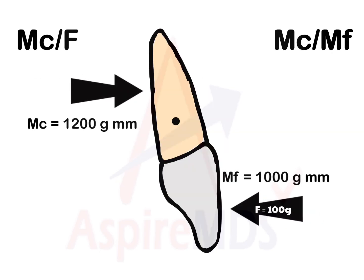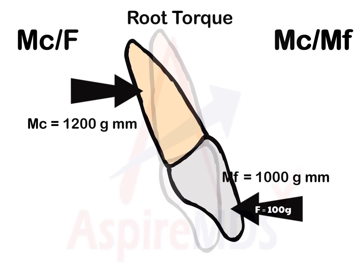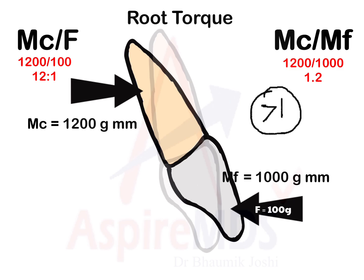If the counterclockwise moment of couple exceeds the moment of force — for example, 1200 gram-millimeters — the center of rotation moves to the crown, first to the incisal edge, and any further increase moves it to the bracket. Because the counterclockwise movement is stronger, the apex of the root moves back in the direction of the applied force while the crown may actually move forward in the opposite direction. This type of movement is known as root torque. Here, moment of force is 1000 gram-millimeters and moment of couple is 1200 gram-millimeters, giving a moment to force ratio of 12:1 and a moment of couple to moment of force ratio of 1.2 — more than 1. This movement is utilized for maxillary central incisors that are retroclined and need to be proclined.